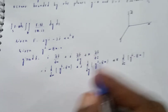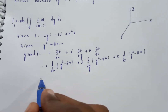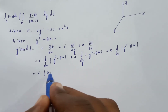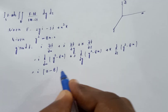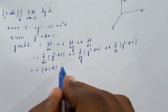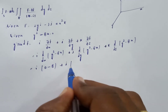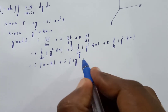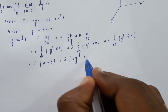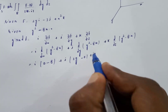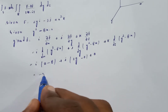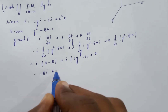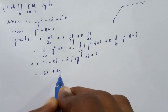The gradient gives: i times (-8) from d/dx of x equals 1, plus j times 2y from d/dy of y square, plus k times 0 from d/dz. Result: minus 8i plus 2yj.